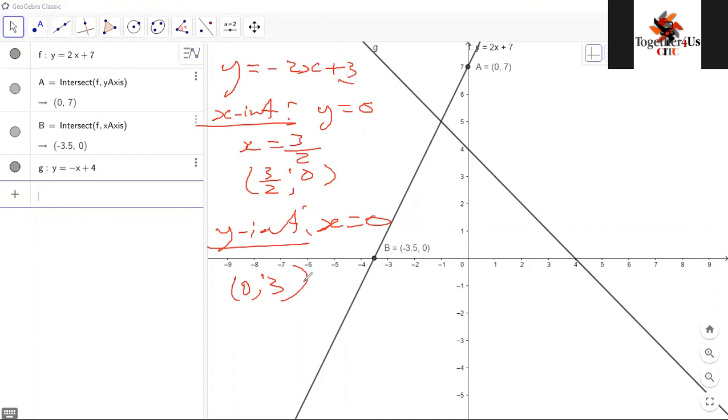Let me find the point 0 and 3. 0 and 3 is here. And what is the point 3 over 2 and 0? It's somewhere here, right?